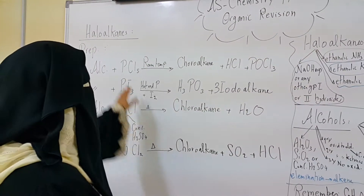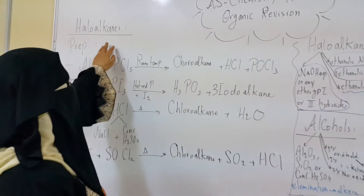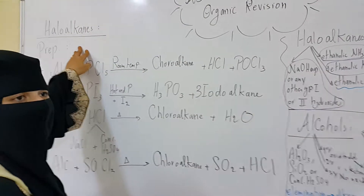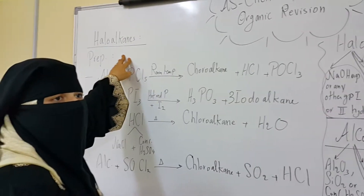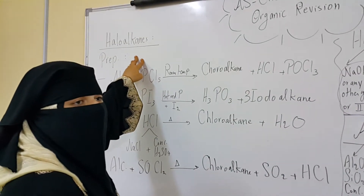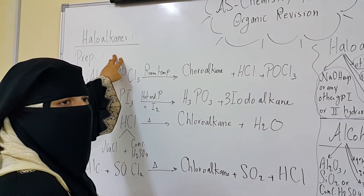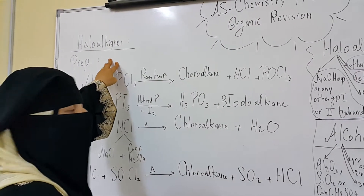Back again to organic chemistry. Halo-alkanes are compounds with a halogen attached to a carbon, substituting a hydrogen atom from the alkane.